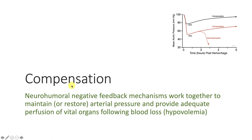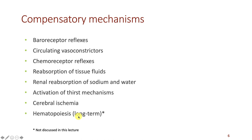Let's talk about the idea of compensation and look at mechanisms that contribute to it. Compensation can be defined as neurohumeral negative feedback mechanisms that work together to maintain or restore arterial pressure and provide adequate perfusion of vital organs following blood loss. There are a number of compensatory mechanisms. The first are baroreceptor reflexes — these are the most important, primary, and initial reflex to help restore or at least maintain blood pressure in the face of a loss of blood volume.